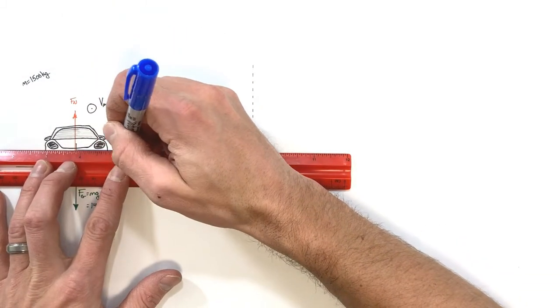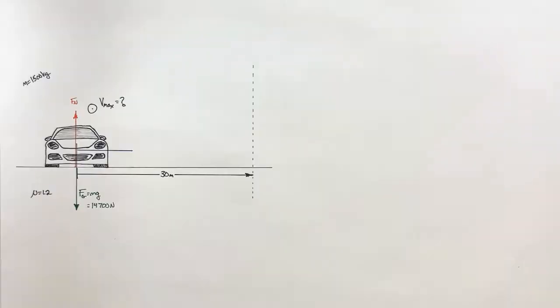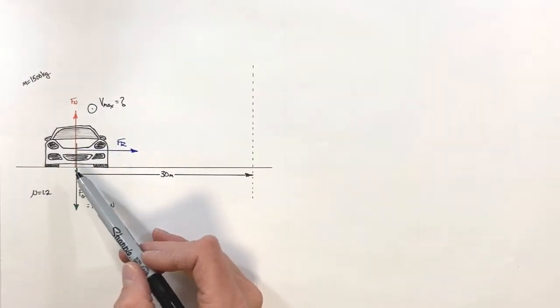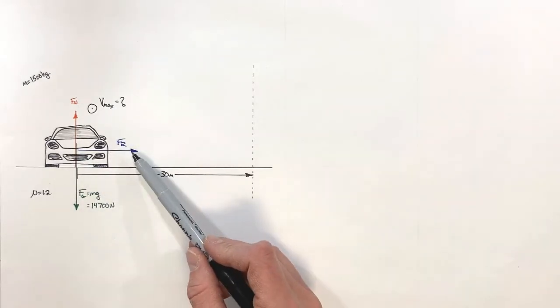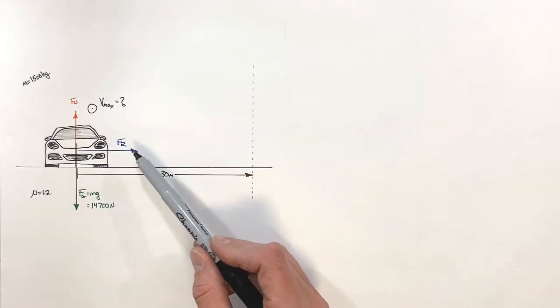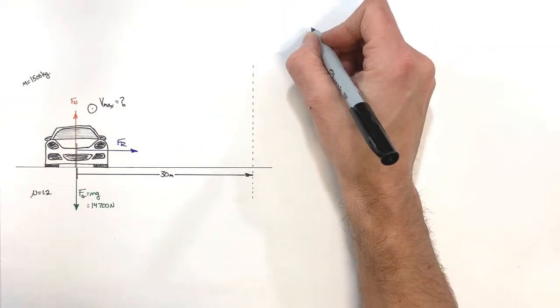The friction is acting as the centripetal force in this case, so we're going to show this friction as being inward. Alright, so realize in this problem we're trying to solve for the velocity at which the car is going to travel around the corner. We know friction is acting as the centripetal force, and that is in fact where we're going to start our calculation here.